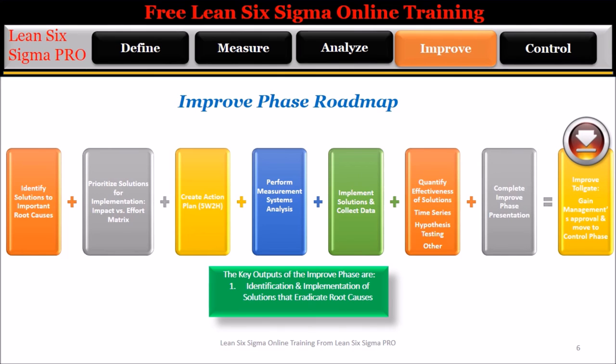Step 8: Improve tollgate — gain management's approval and move to the control phase. The key output of the improve phase is: 1. Identification and implementation of solutions that eradicate root causes.